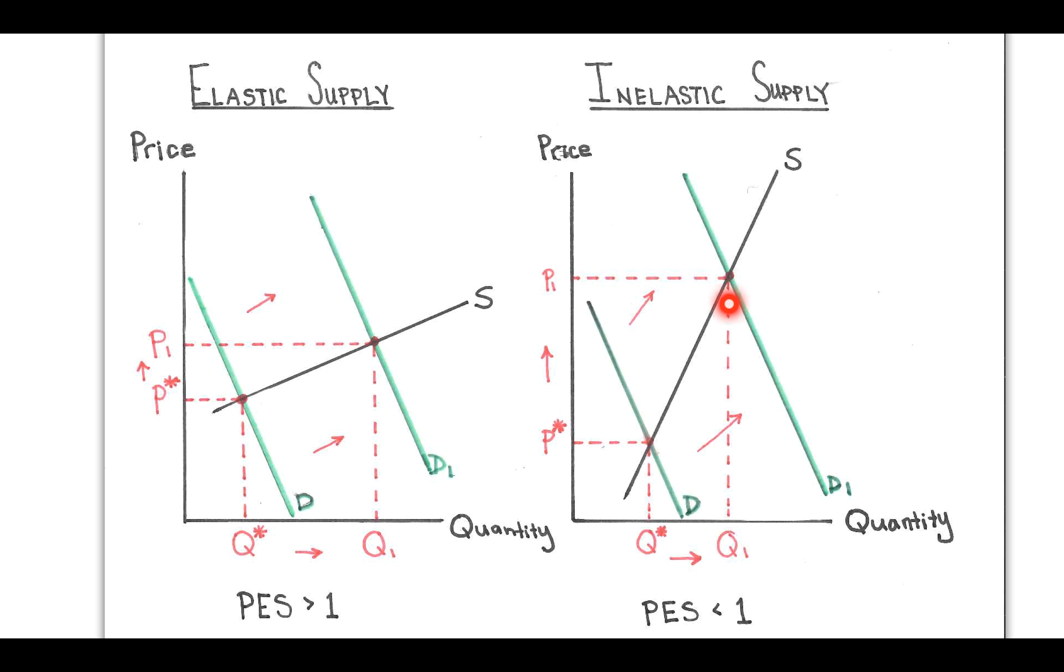So price goes up quite a bit, although quantity doesn't go up at the same rate. So that's the key difference between elastic and inelastic supply.